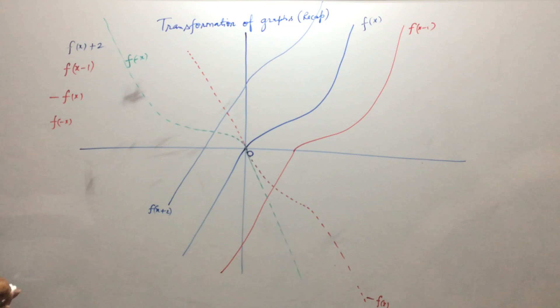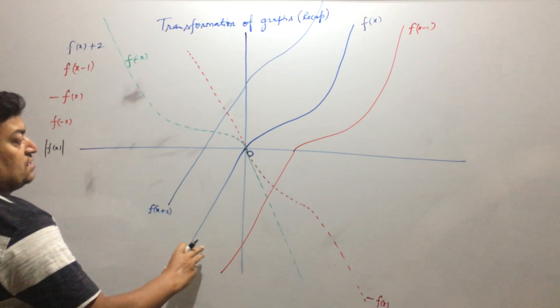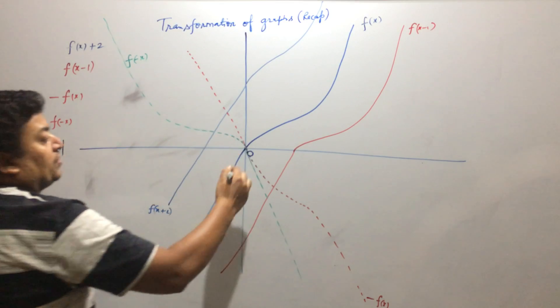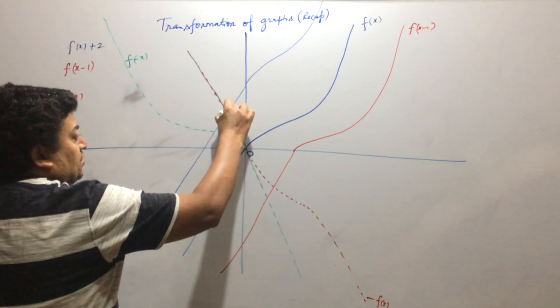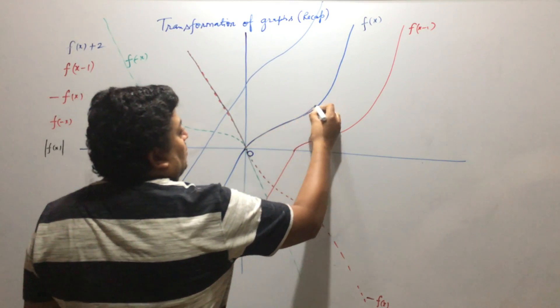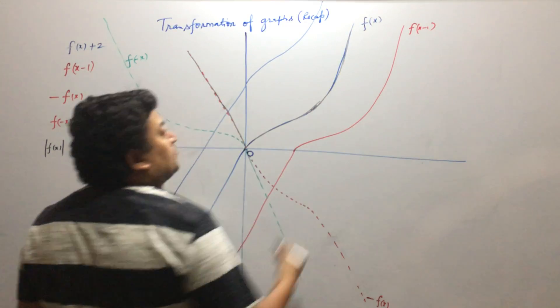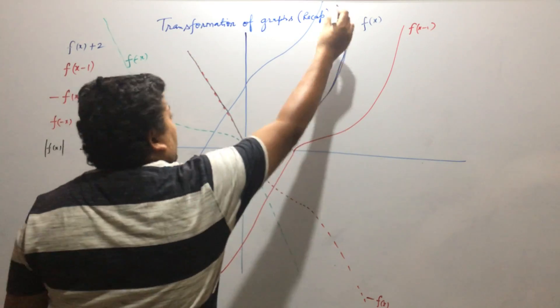So suppose we have to draw the graph of mod f. For mod f of x, whatever portion is below x axis, you have to bring it up. So this will be the graph of mod f of x. Fine, so this is my graph of mod f of x.